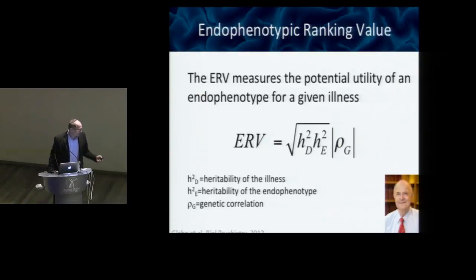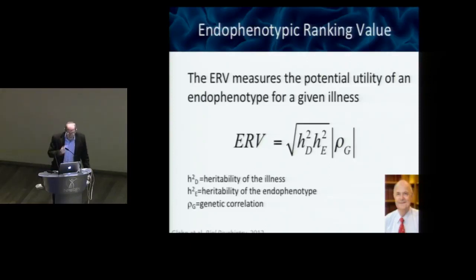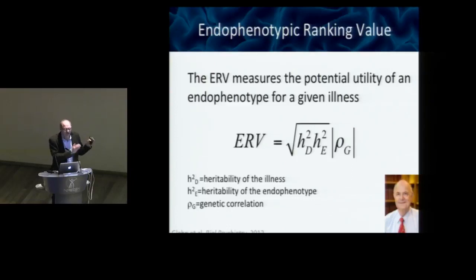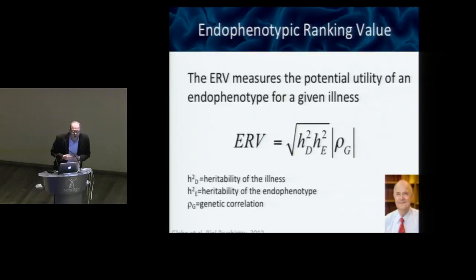We came up with the ERV or Endophenotype Ranking Value statistic. The ERV measures the potential utility of an endophenotype for a given illness. It is the square root of the heritability of the disorder, times the square root of the heritability of the endophenotype, multiplied by the absolute value of their genetic correlation — essentially a standardized genetic covariance. If you maximize the standardized genetic covariance between an endophenotype and the illness, you have a better endophenotype. We named it ERV after Irving Gottesman, who coined the term endophenotype back in the early 70s.